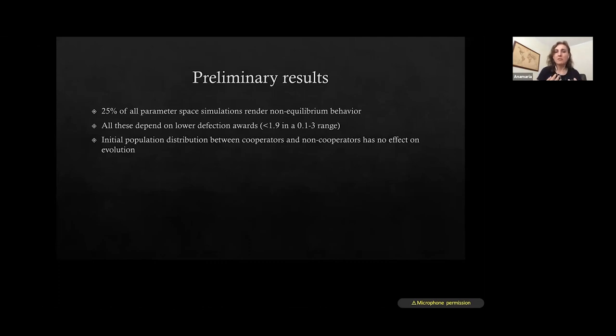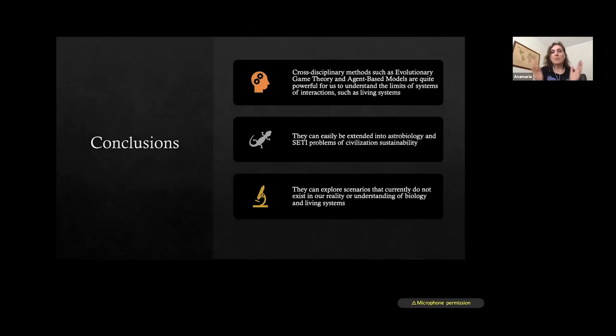And the initial population distribution over cooperators, non-cooperators actually has no effect on the evolution. So we can start with a large population of competitors. And over time, using the games, the evolutionary game theory, we see that actually cooperative behavior arises.